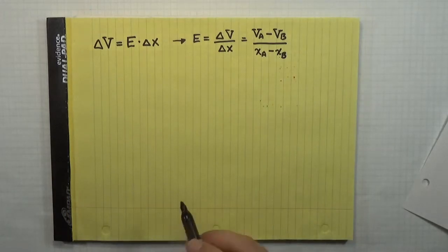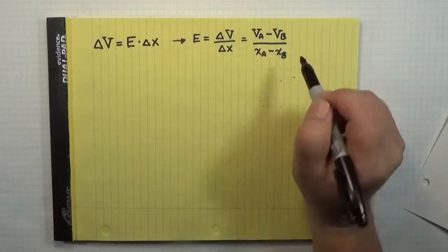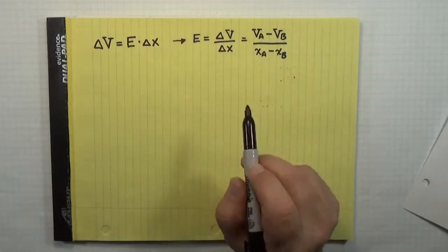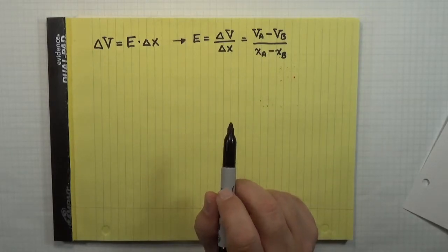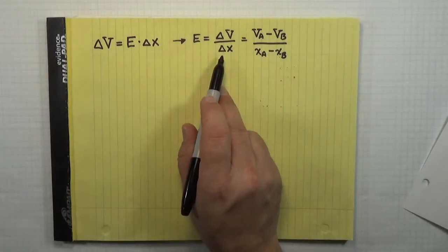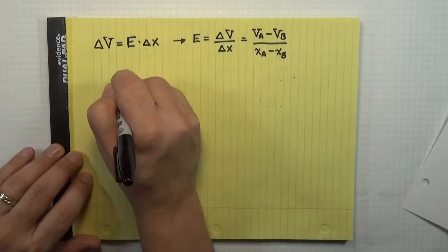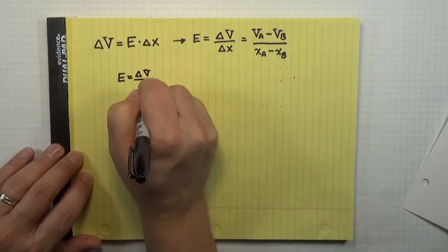Now, the way the problem is given to me, I'm given these values explicitly. I'm not given what the individual A and B values are. But if you had a more complicated problem, you would have to insert them in the appropriate place and make sure you are cognizant of what those sign values are. But for this problem, we're told the information in the form of the delta, so we can use that. So the electric field in this case is delta V over delta X.